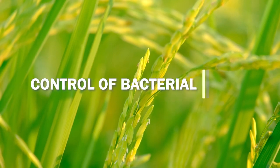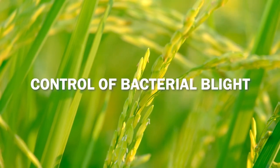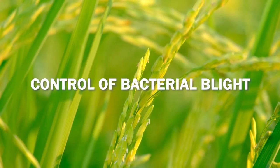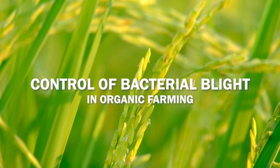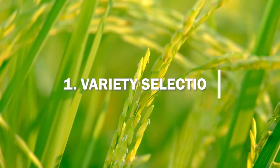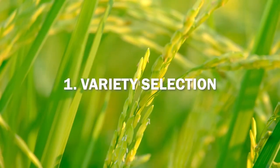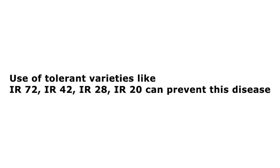Control of bacterial leaf blight diseases of rice in organic farming: Variety selection — use of tolerant varieties like IR-72, IR-42, IR-28, and IR-20 can prevent this disease.